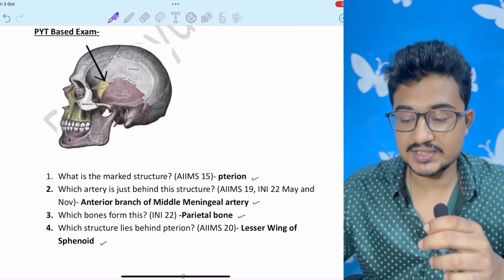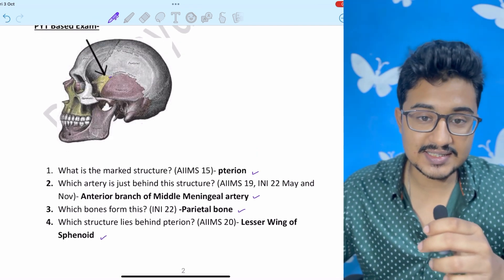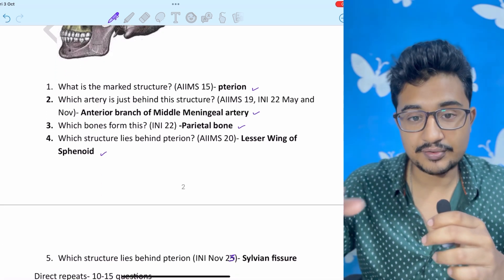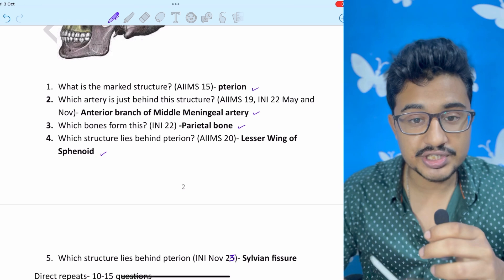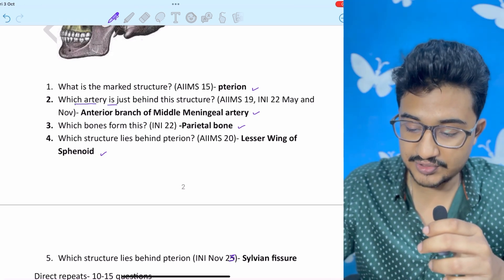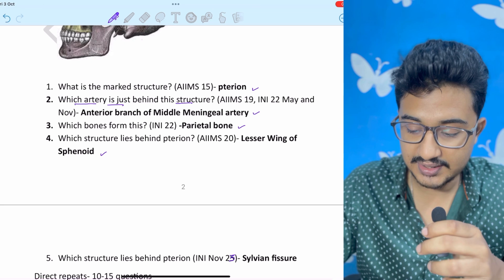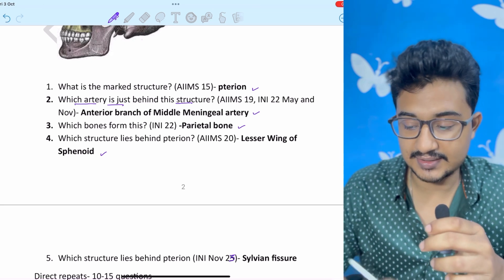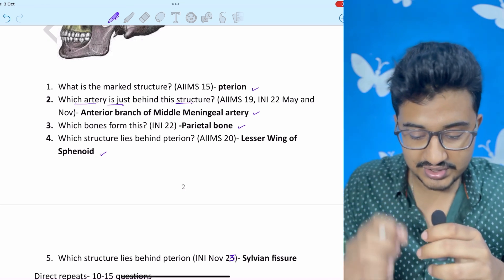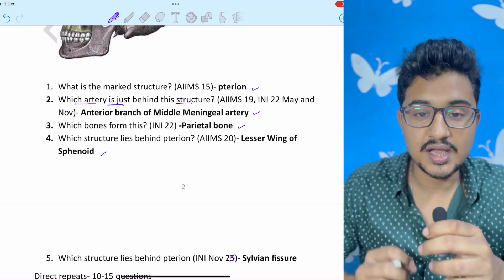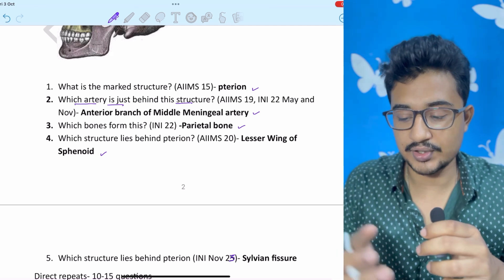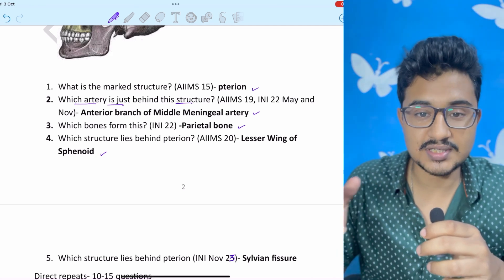See 10 questions came from terion itself in the last 10 years. So you can understand that from one topic they are giving but the question is not the same all times. Three times the question came that which structure or which artery lies behind the terion. But most of the times they change the question. So you have to see a previous year question and then you have to see the direction in which direction they are going.